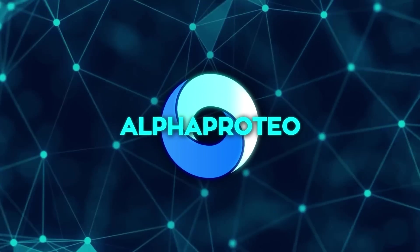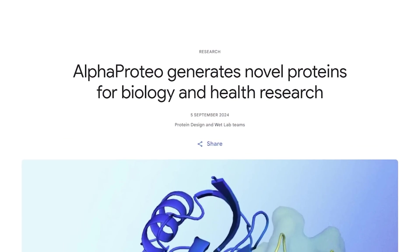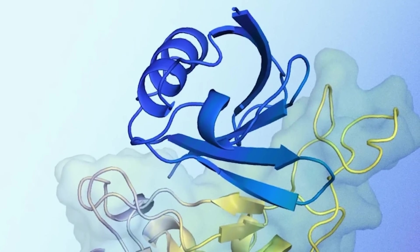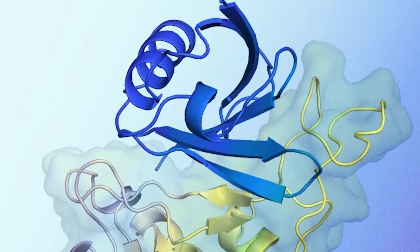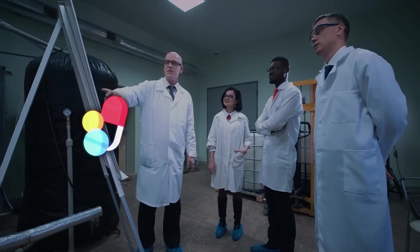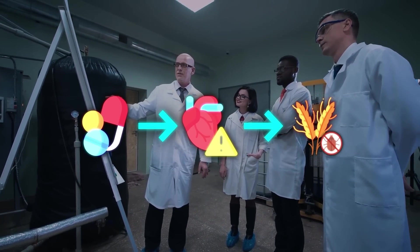Enter AlphaProteo by Google DeepMind. This is the new AI system we're talking about today. It doesn't just predict interactions. It designs entirely new proteins that can bind to specific target molecules. And why is that important? Well, these designed proteins, also called binders, can speed up all sorts of research, from drug discovery to figuring out how diseases work, to making crops more resistant to pests.